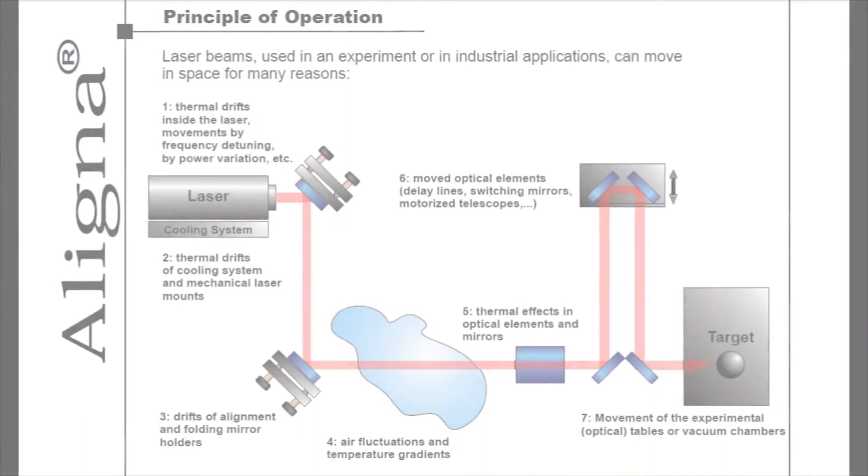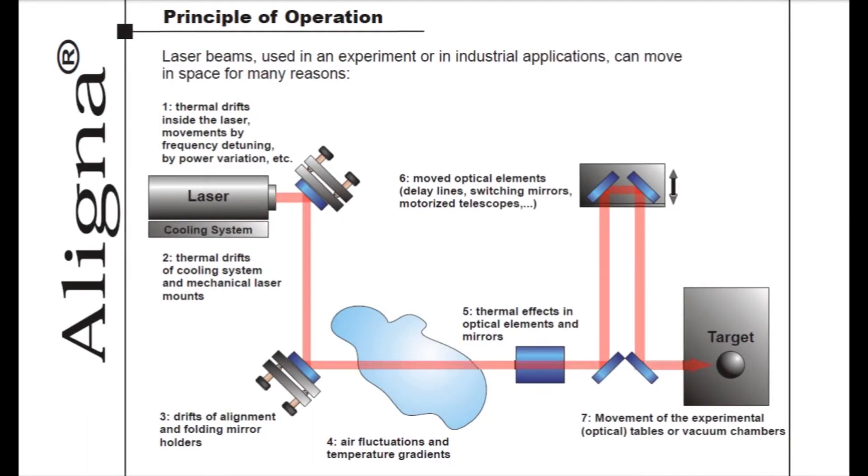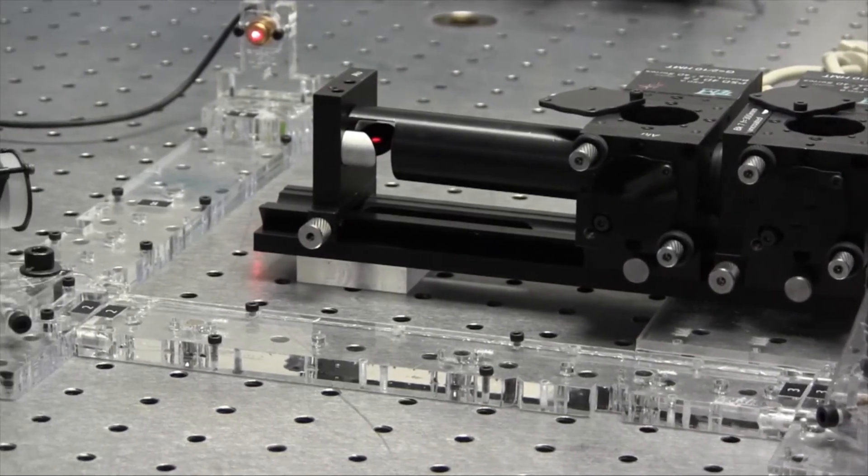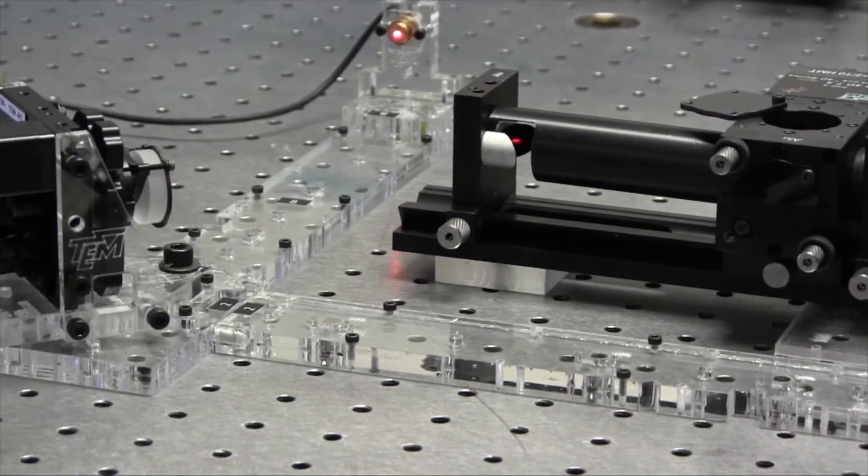Lasers can fluctuate due to changes in temperature, vibrations, as well as the introduction of new optical components into your system. Variations in beam positions such as this can be problematic in long-term research experiments or high-precision materials processing applications.